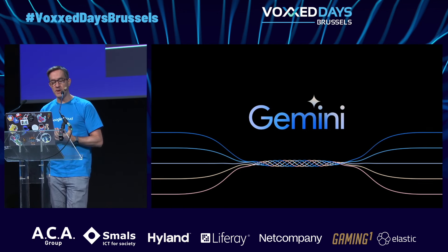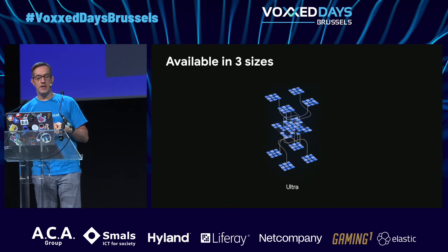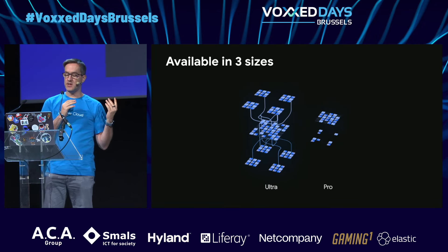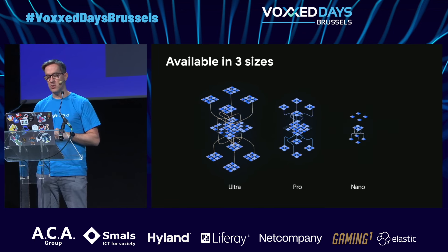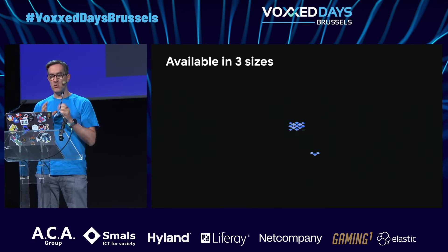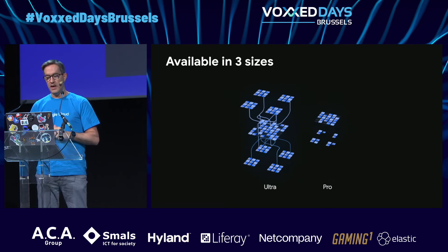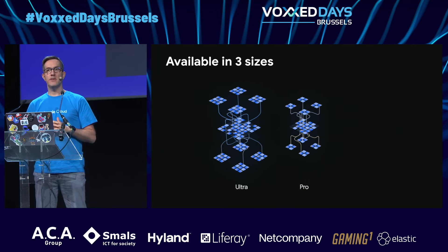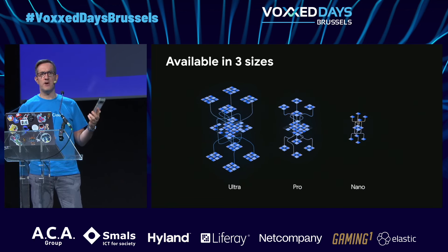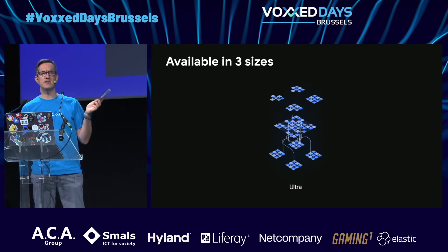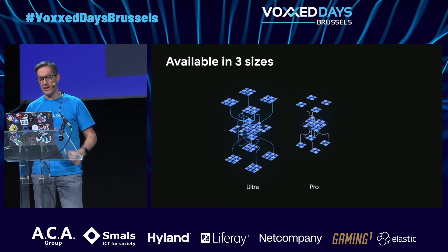Gemini is available in three sizes: Ultra, the biggest one; Pro, the one you will likely use the most; and Nano, a small one that can fit in a smartphone. It's bundled in the Pixel 8 and also on the latest Samsung S24.